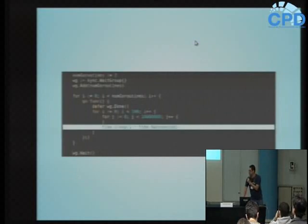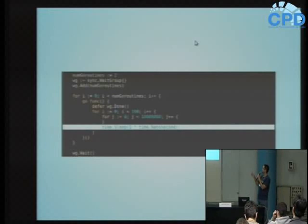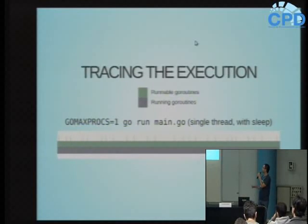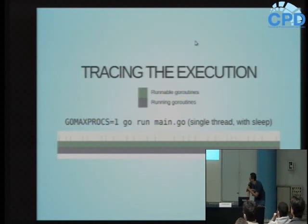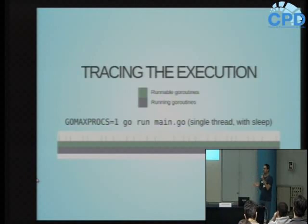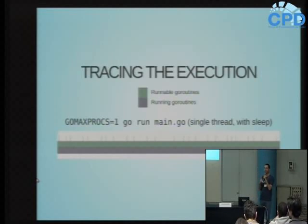Se eu fizer uma pequena mudança no código e colocar um sleep - por menor que seja, um nanosegundo - eu já dou oportunidade para o scheduler interromper a execução. Então, com GOMAXPROCS=1, ele vai interrompendo a execução várias vezes, alternando de uma GoRoutine para a outra. Isso é uma característica importante: se o meu código não tiver nenhuma interrupção, posso acabar tendo uma única GoRoutine executando até o final, deixando as outras bloqueadas.